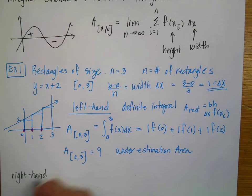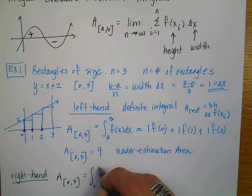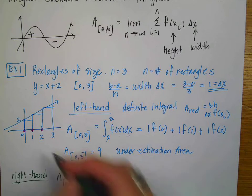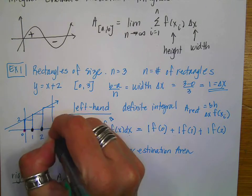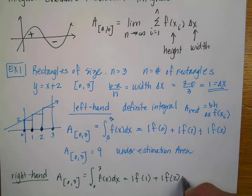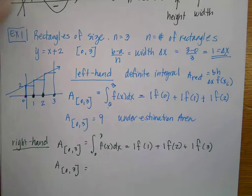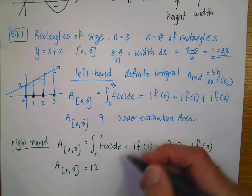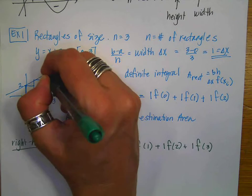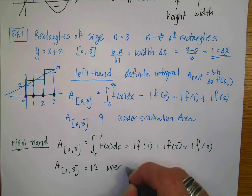I'm going to do the right-hand approximation. It's still the area from 0 to 3, and I'm going to have the integral from 0 to 3 of f of x dx. But now my right-hand endpoints are here — I'm taking the right-hand side of each rectangle. My delta x is still 1. So now it's going to be 1 times f of 1, then 1 times f of 2, then 1 times f of 3. When I do the right-hand approximation, the area is equal to 12. If I'm using the right-hand side, I have an over-approximation.